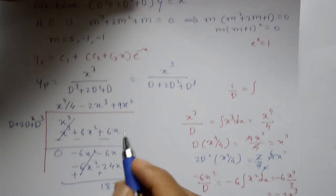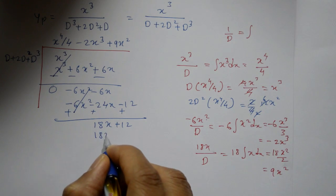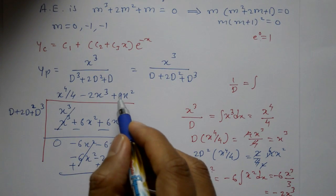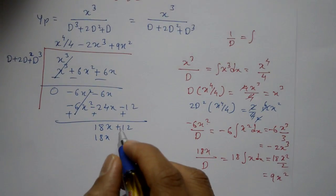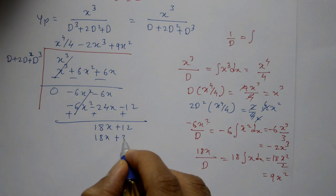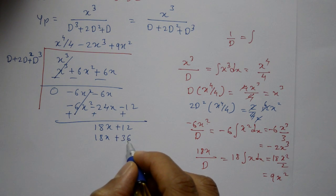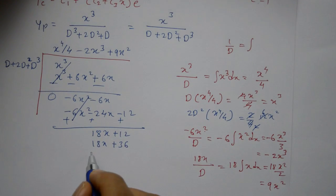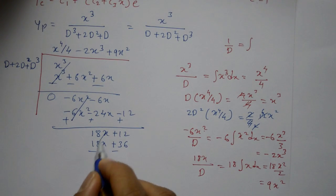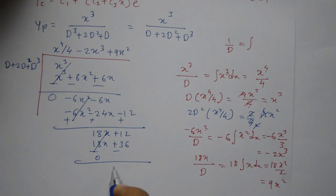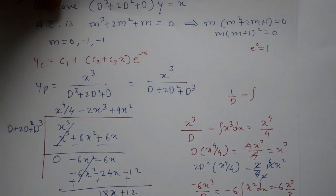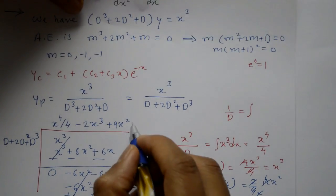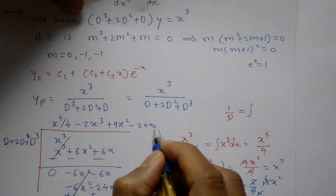Next quotient term is 9x². Now D into 9x² = 18x. 2D² into 9x² = 36. Subtracting and changing sign, difference leaves -24x. So -24x divided by D means integrating: -24x gives -24x as next remainder term.